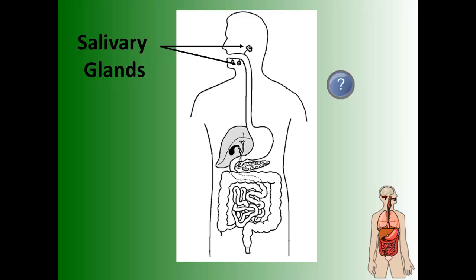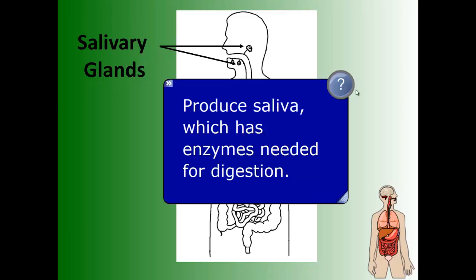The next thing that happens while you're chewing is the first part of chemical digestion. This is the salivary glands, and they produce saliva, which has enzymes that we need for digestion. Only certain things are able to dissolve in your mouth — your salivary glands can't do it all — but they start the process. This is where the very first spot of chemical digestion happens.